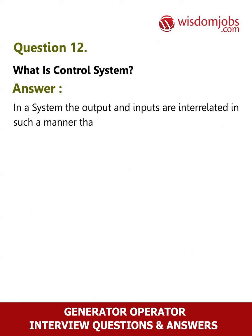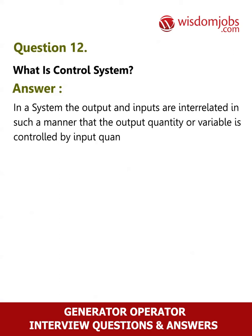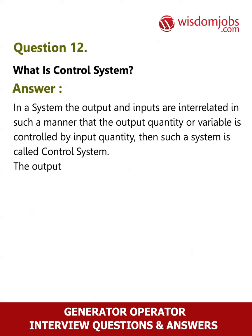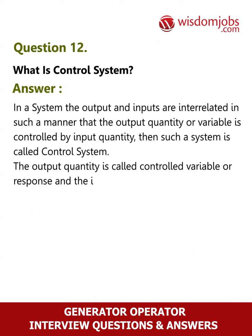Question 12: What is a control system? Answer: In a system where the output and inputs are interrelated in such a manner that the output quantity or variable is controlled by the input quantity, such a system is called a control system. The output quantity is called the controlled variable or response, and the input quantity is called the command signal or excitation.